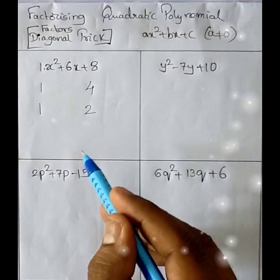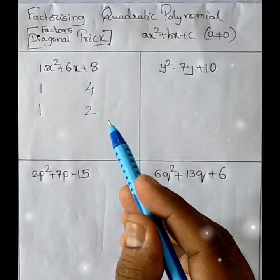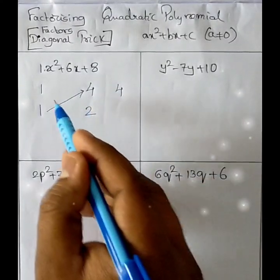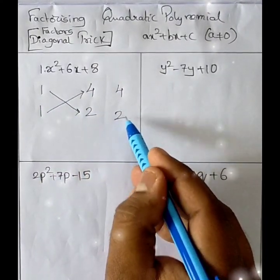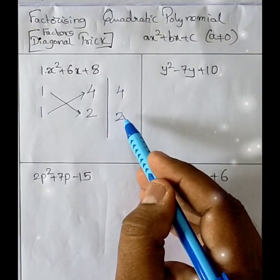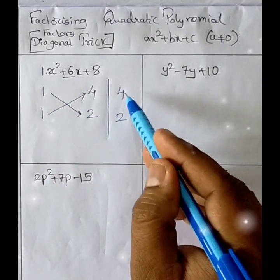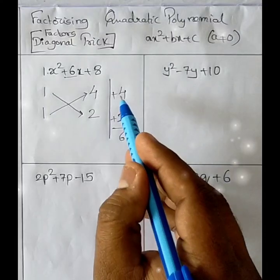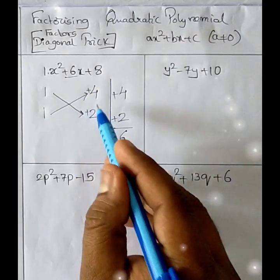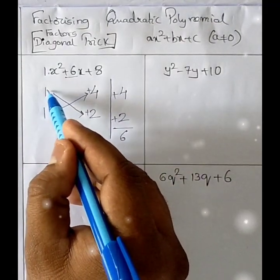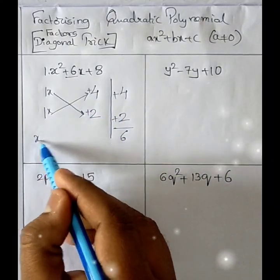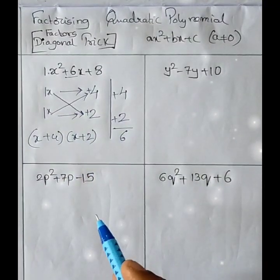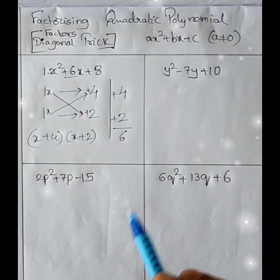I am writing the bigger factor at the top and smaller factor at the bottom. Next I will be multiplying these factors diagonally: 1×4 = 4 and 1×2 = 2. The middle term is +6, so I need to add these two — taking both signs as plus: 4 + 2 = 6. So the factors are (x + 4)(x + 2).